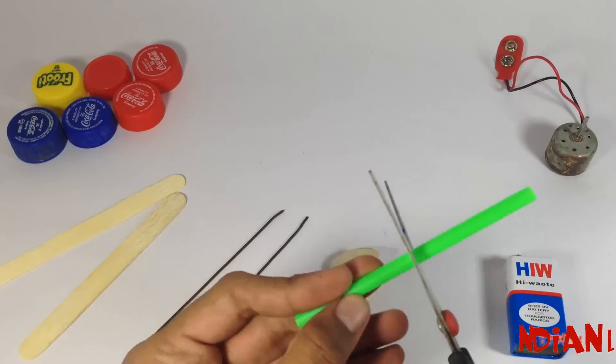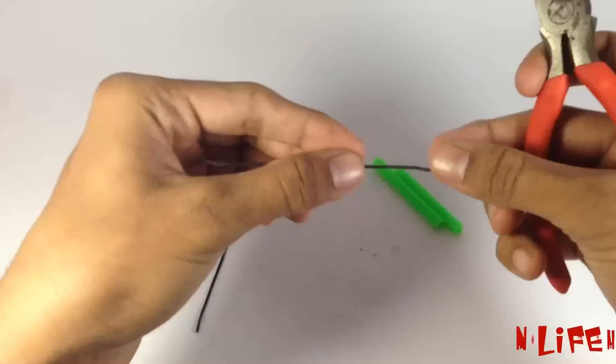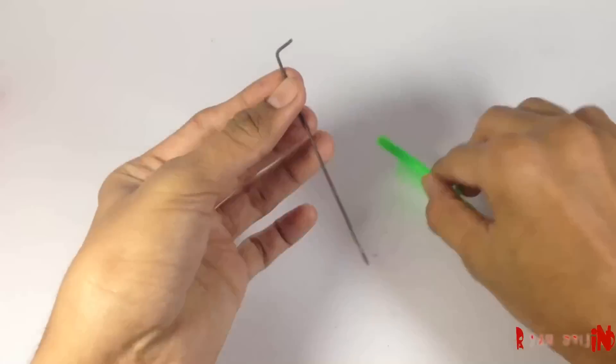Cut the straw to about 4 to 5 cm and the wire should be 7 to 8 cm.